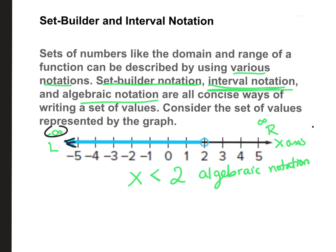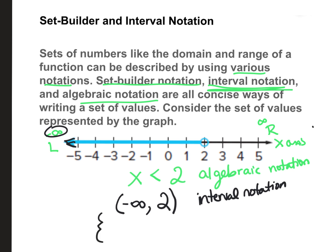The blue starts at negative infinity, which gets a parenthesis, and stops being blue at 2. Two is excluded, so it also gets a parenthesis. So the interval notation is negative infinity to 2, both with parentheses. Your set builder notation looks like this: the set of x, x such that — that vertical bar is read 'such that' — x is less than 2. That is set builder notation.